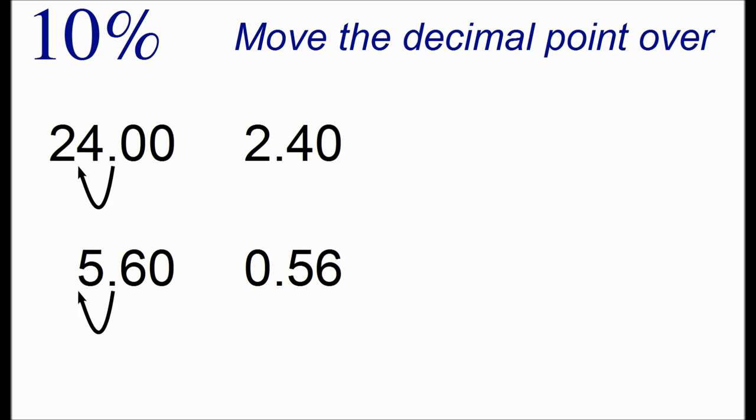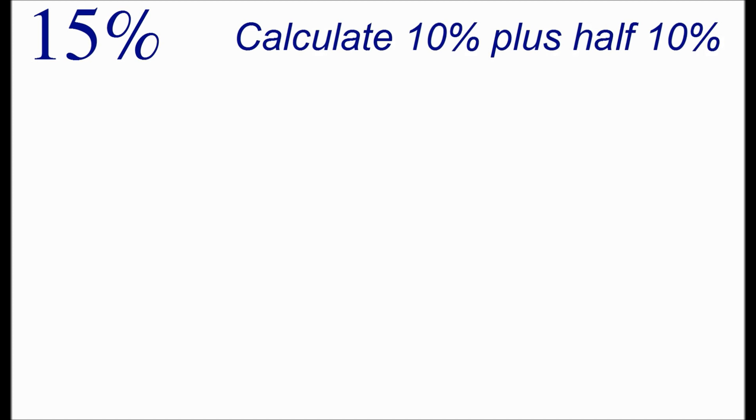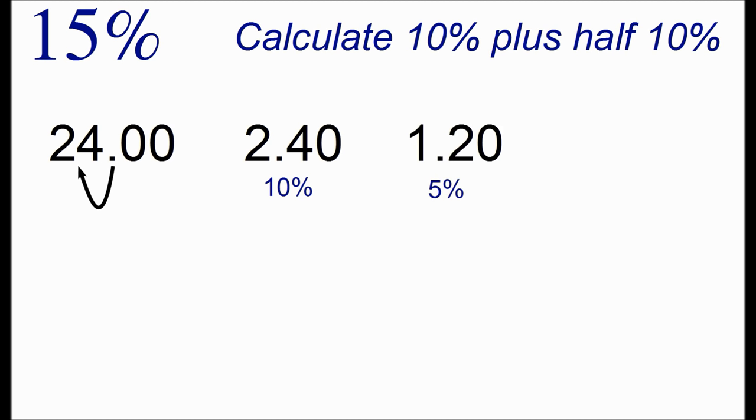It's very easy to calculate 10% and that'll give us a method to calculate 15%. We first calculate 10% and then we add half of 10% to itself. In the number 24, we start out by calculating 10% by moving the decimal point one spot over and now we take half of that. So half of 2.4 is 1.2 and we add these two numbers together to get us 15% which is 3.6.